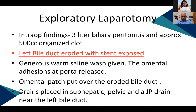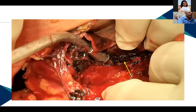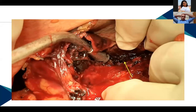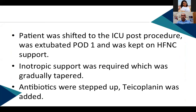Intraoperatively, there was biliary peritonitis with organized clot around the biliary duct. The left bile duct was eroded, with the stent exposed. The arrow in the intraoperative image points at the exposed metallic framework of the stent. A warm saline wash was given. Since reconstruction was not feasible due to the metal stents, an omental patch was placed by the surgeons and drains were placed in the sub-hepatic and pelvic regions, along with a JP drain around the left bile duct.